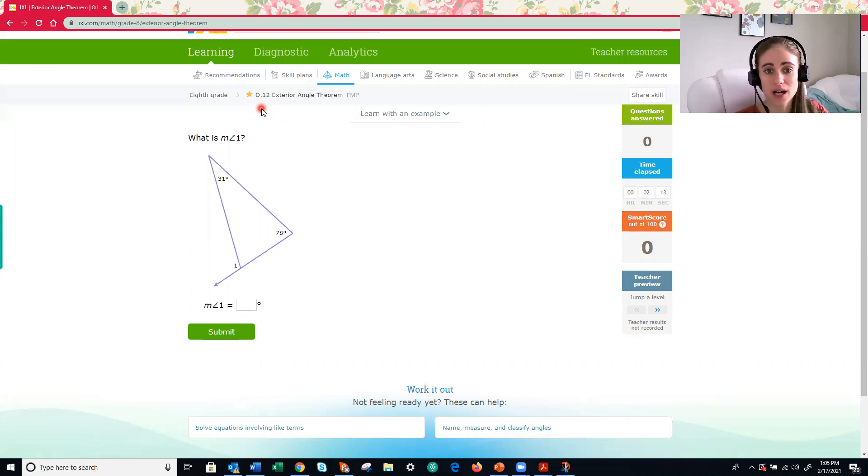all about basic geometry shapes. This IXL assignment, based on its name, focuses on the theorem, so kind of like the rule, that we know about the exterior angle of triangles. So let's very quickly review what that rule is and then we can hop into practice.